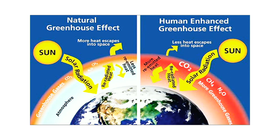Before industrialization, simple human activities did not cause any significant increase in atmospheric temperature. However, due to urbanization and industrialization, greenhouse gases have increased significantly in the atmosphere in recent years. This is a comparison between the earlier natural greenhouse effect — which was heating Earth and making it habitable — and modern times, when the human-enhanced greenhouse effect is heating the Earth tremendously.